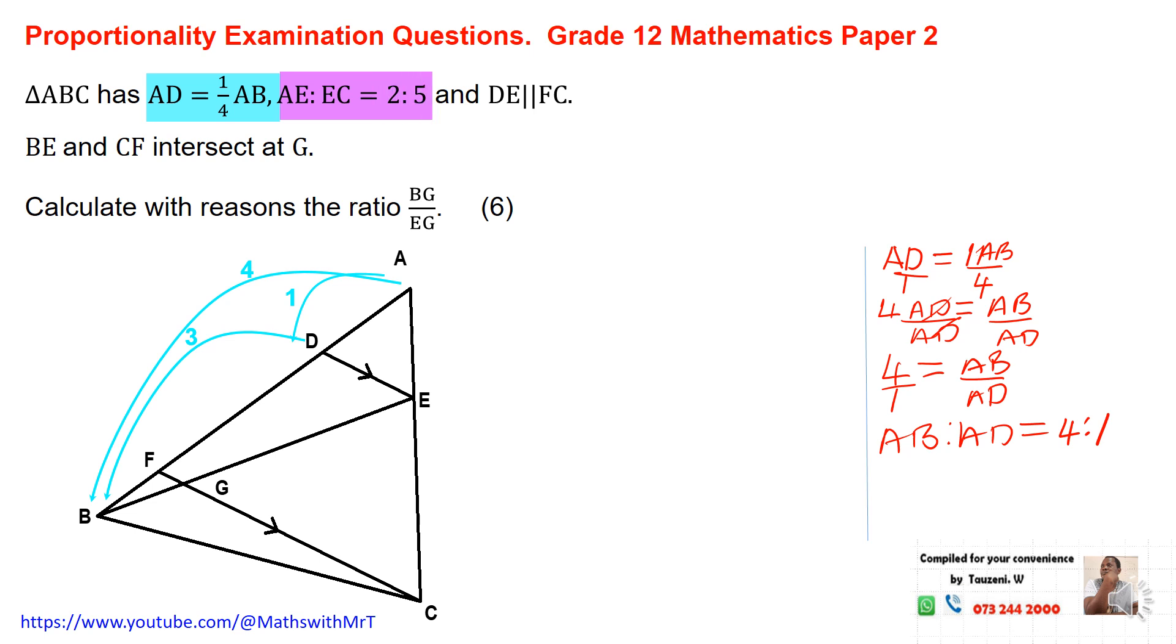The next part of the question talks about AE. AE divided by EC equals to 2 to 5. Now, because we have parallel lines in our diagram, if you look at the two parallel lines we have, we have a parallel line here. We have a line from point E. We have another line here. If you are given parallel lines, your ratio affects both sides of the triangle. That is proportionality.